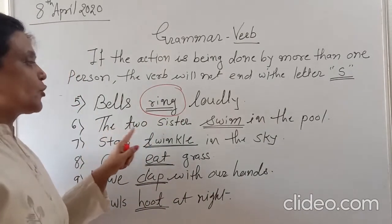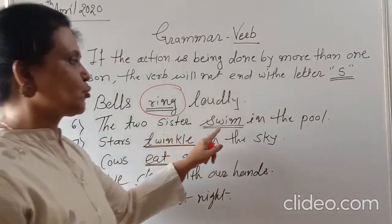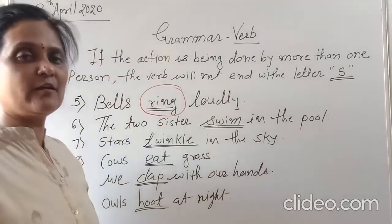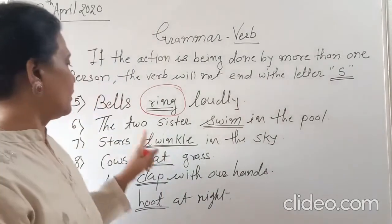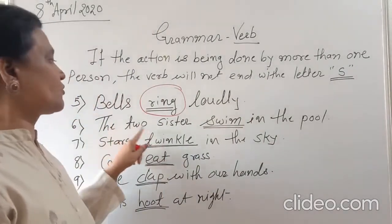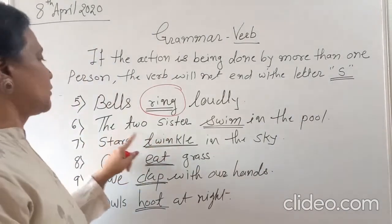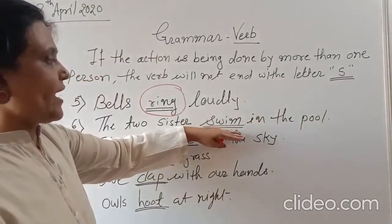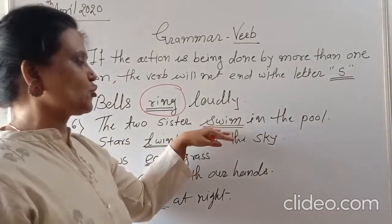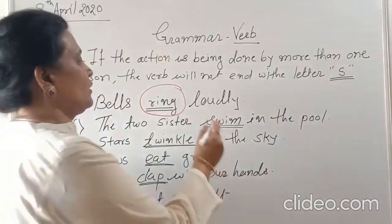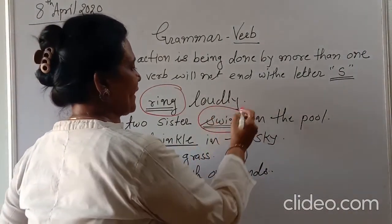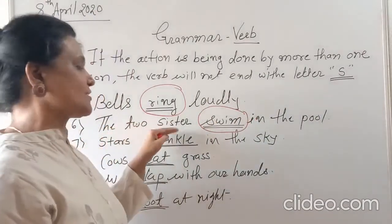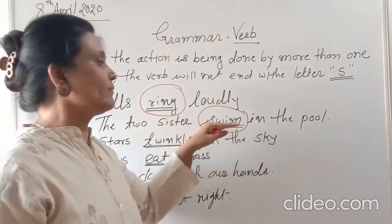The two sisters swim in the pool. How many sisters are here? More than one — two. The two sisters — more than one sister. The two sisters swim in the pool. What are they doing? What is the action word in this sentence? Swim. Swim is the action word. You cannot use 's' here because there is more than one person — two sisters are here. They swim in the pool.